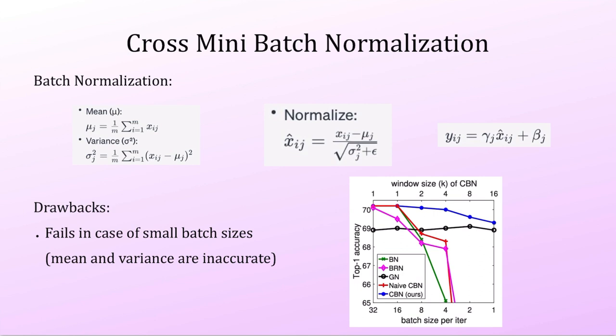I have a separate playlist for batch normalization where I go deeper into the need, equations, and Python implementation. Batch normalization has a drawback: it fails with small batch sizes because the mean and variance calculations rely on batch size. If the batch size is only 2 or 4, the statistics are not significant, since the assumption is that the batch represents your full training dataset.